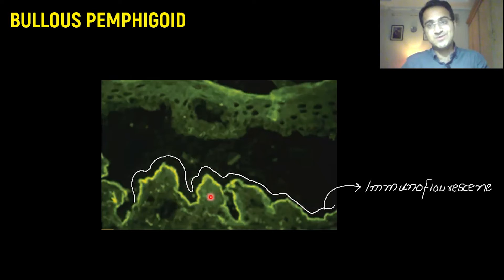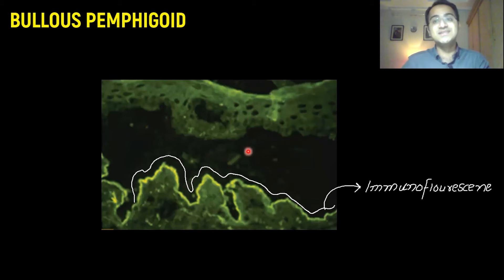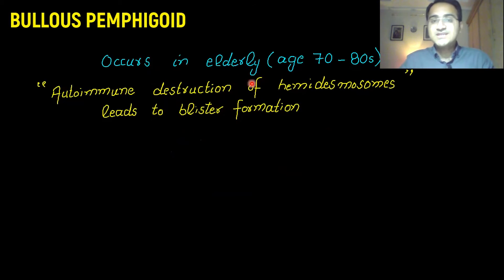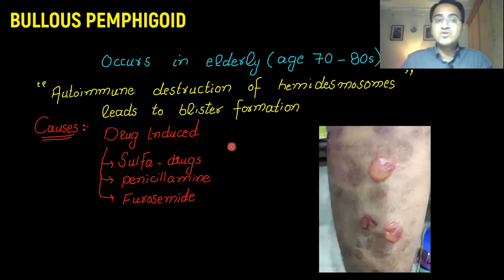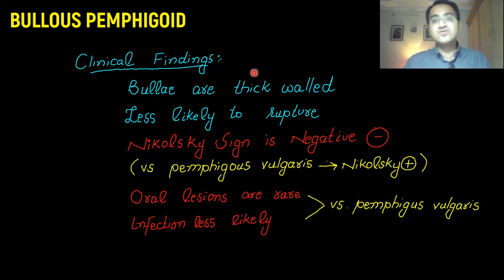This detached skin above the linear immunofluorescence pattern is the skin that has separated from the basement membrane, with the fluid-filled space between them forming the blister. Bullous pemphigoid usually occurs in elderly patients in their 70s to 80s. The causes are usually drug-induced — most commonly sulfur-containing drugs, penicillamine, and furosemide.